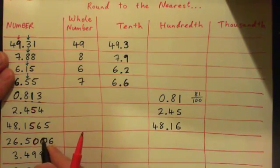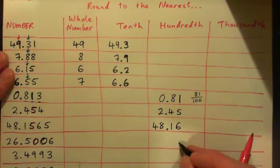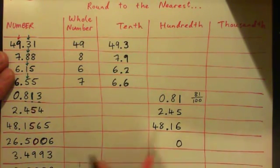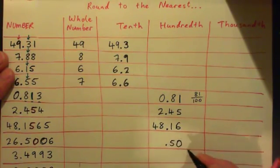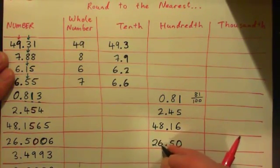You're just worried about this digit here. The digit to the right is zero, so we round down — we get zero — and then we have five. We have 26.50.